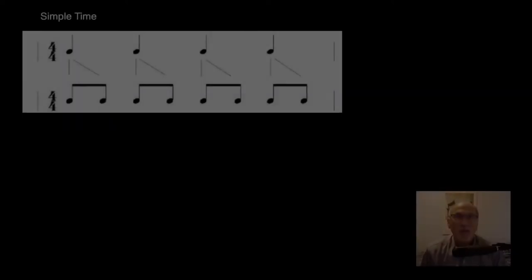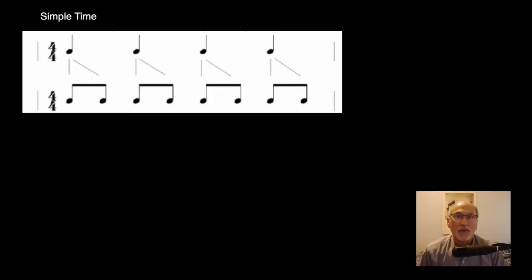Chapter 24, Asymmetric Meter. Way back in Chapter 12, we learned that in simple time, the beats can be evenly divided into two parts, as when a quarter note divides into eighth notes in 4-4 time.